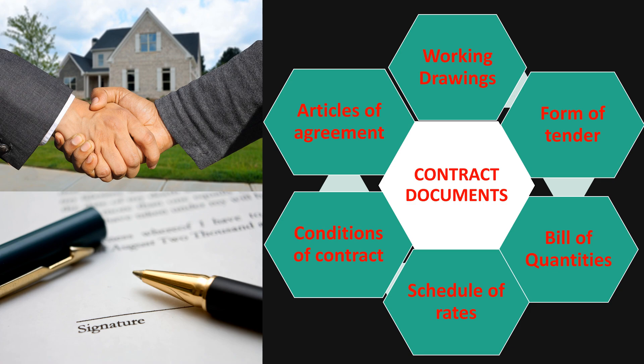Hey everyone, welcome back to our channel. My name is Naomi and today we shall be looking into types of contract documents and their importance. Whenever we have a contract between a contractor and a client, there are documents that are supposed to be involved, such as working drawings, specifications, bill of quantities, form of tender, schedule of rates, form of agreement, and conditions of contract. We are going to discuss each one by one.